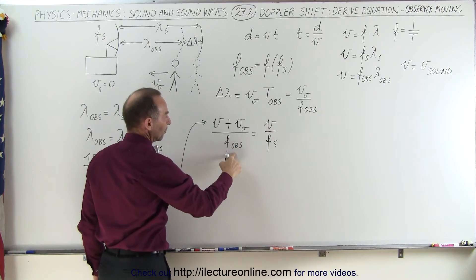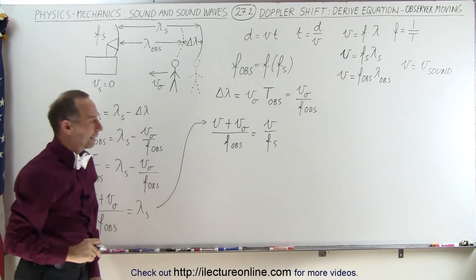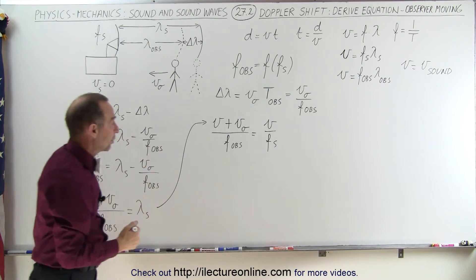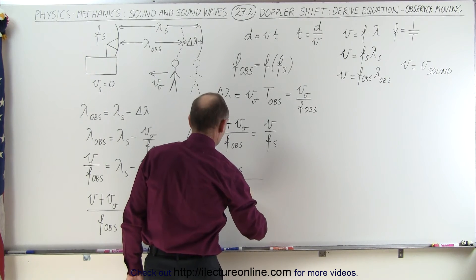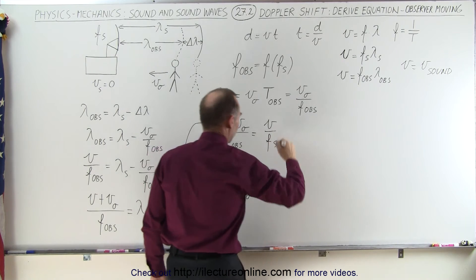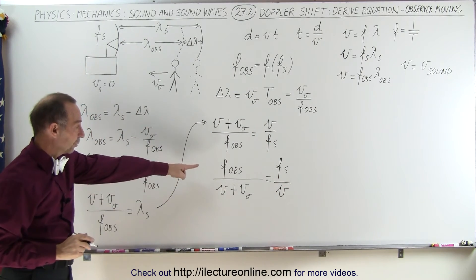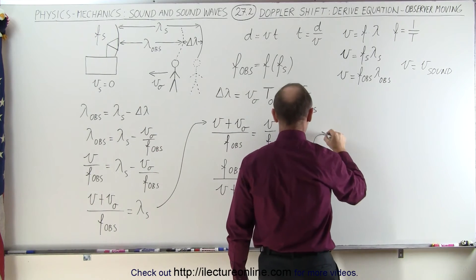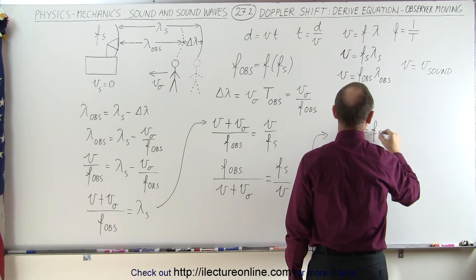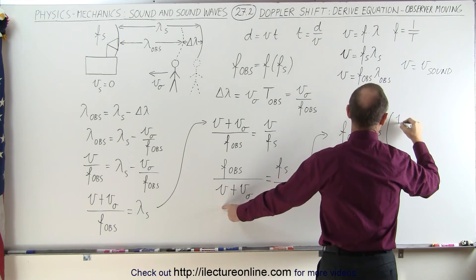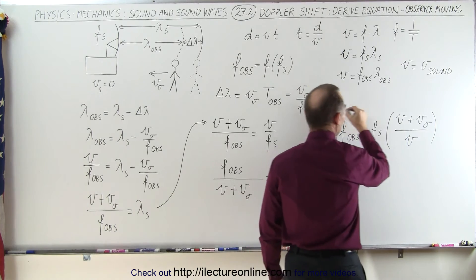Now we have both the frequency of the observer and the frequency of the source in the same equation. To solve for f_observed, we flip the equation: f_observed / (v_sound + v_observer) = f_source / v_sound. Finally, solving for f_observed gives us: f_observed = f_source × (v_sound + v_observer) / v_sound. And there is the equation we're looking for.